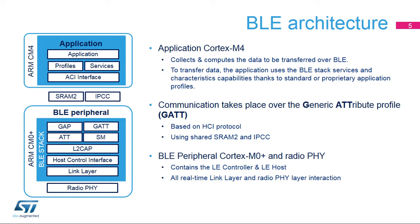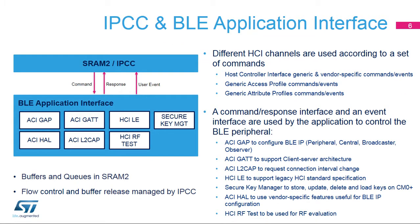For more information on the 2.4 GHz radio, see the specific RF training. Communication between the Cortex-M4 and the Bluetooth Low-Energy peripheral takes place over a memory-mapped mailbox and the Interprocessor Communication Controller, or IPCC, using a host controller interface, or HCI-like protocol format, to support application control interface, or ACI commands, responses, and user events.